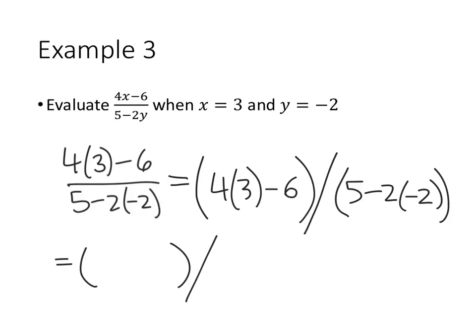We've got 4×3 - 6, so that's 12 - 6 when we do our multiplication. On the bottom we've got 5 - 2×(-2), so that's 5 + 4. Still working inside the parentheses, on the top we have 6 and on the bottom we have 5 + 4, which is 9. So we get an answer of 6 ÷ 9.